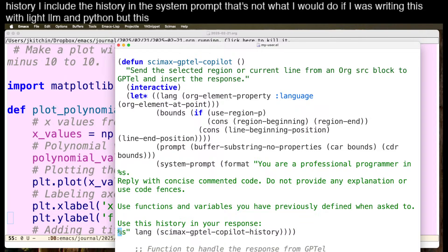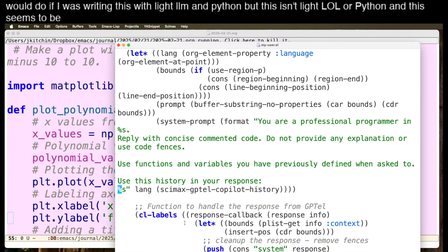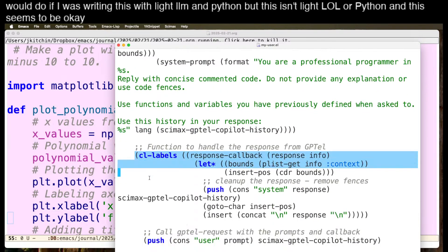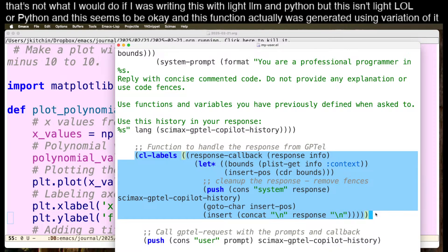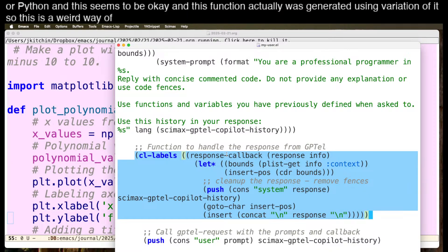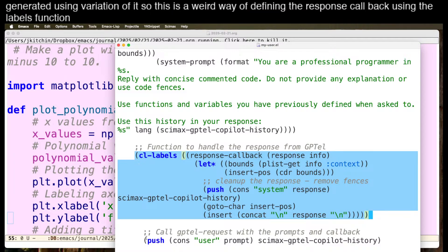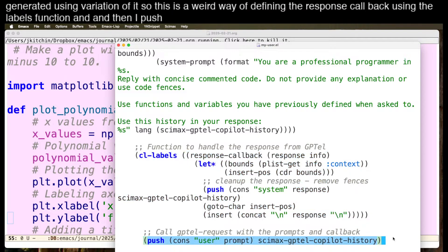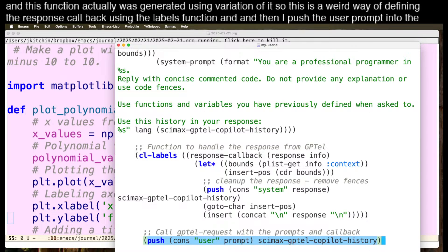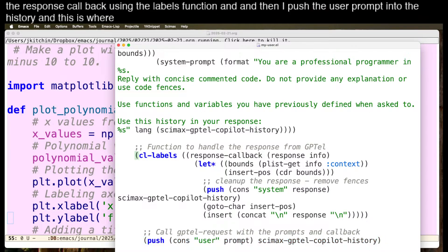But this isn't LiteLLM or Python, and this seems to be okay. This function actually was generated using a variation of it. So this is a weird way of defining the response callback using the labels function. And then I push the user prompt into the history.